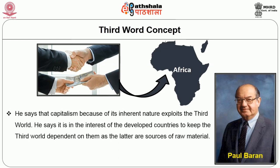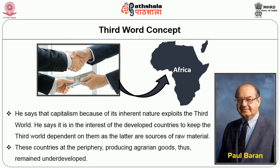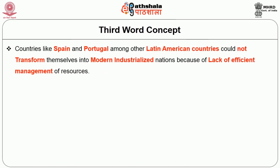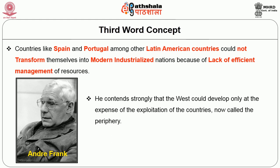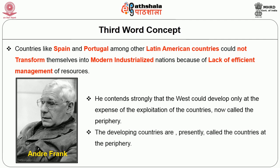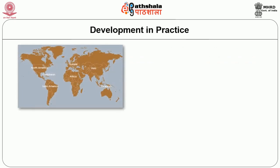Paul Baran says that capitalism, because of its inherent nature, exploits the third world. It is in the interest of developed countries to keep the third world dependent on them, as the latter are sources of raw material. These countries at the periphery, producing agrarian goods, thus remain underdeveloped. Countries like Spain and Portugal among other Latin American countries could not transform themselves into modern industrialized nations because of lack of efficient resource management. Andre Gunder Frank contends strongly that the West could develop only at the expense of the exploitation of the countries now called the periphery.